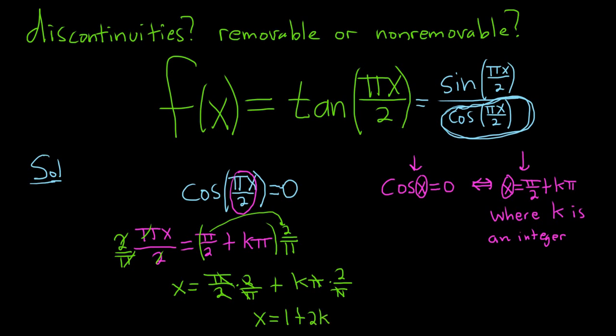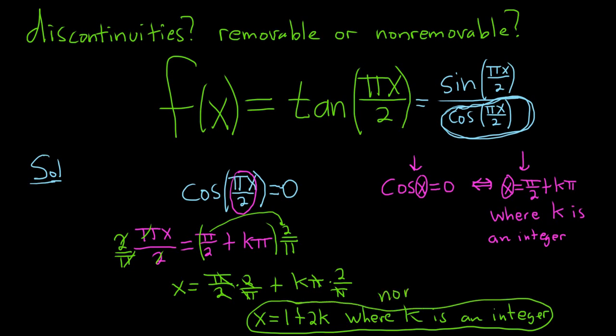Where k is an integer. So these are the discontinuities. I think I already said it, but I'll write it down—they are all non-removable. Vertical asymptotes are always non-removable.